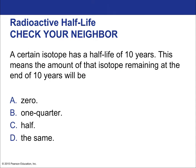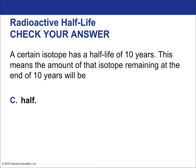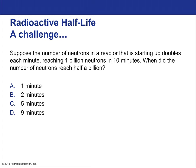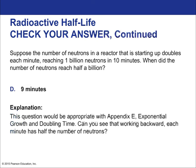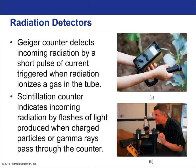A certain isotope has a half-life of 10 years — this means half the isotope remains at the end of 10 years, not that it's all gone. For exponential growth: if neutrons in a reactor double each minute and reach 1 billion in 10 minutes, they reached half a billion one minute earlier — at nine minutes. This is because doubling means each prior minute had half the current amount.